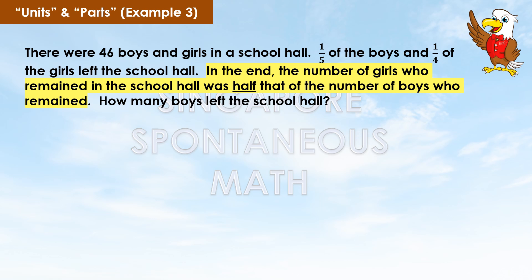There were 46 boys and girls in a school hall. One-fifth of the boys and one-quarter of the girls left the school hall. In the end, the number of girls who remained in the school hall was half that of the number of boys who remained. How many boys left the school hall?